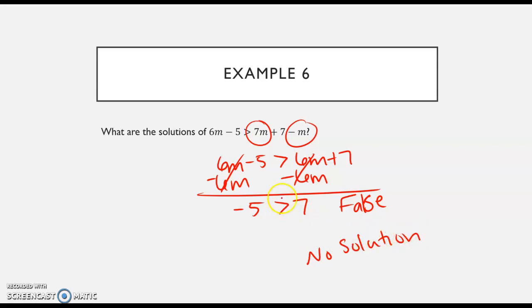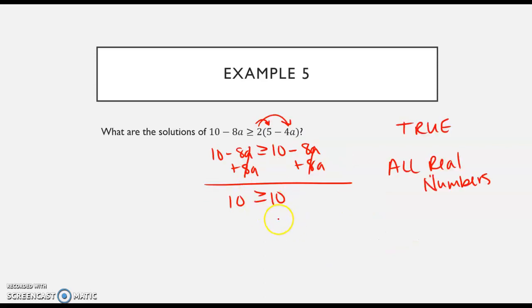And you do have to be careful because it also depends on the sign. So like if we're looking at example five, if this was just greater than and didn't have the equal to, 10 greater than 10 isn't true. So then it would be no solution. But because it has the equal to, then it's an all real numbers.